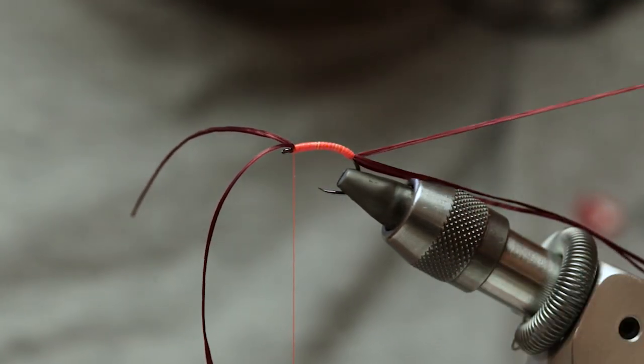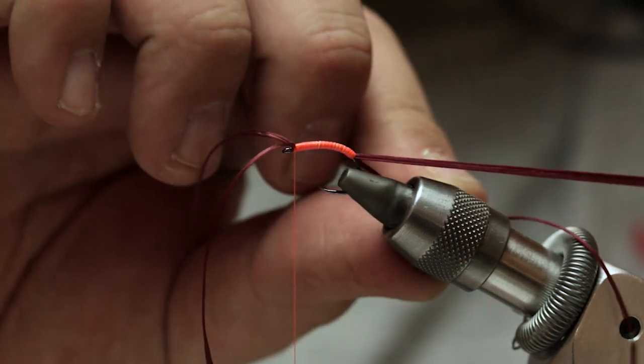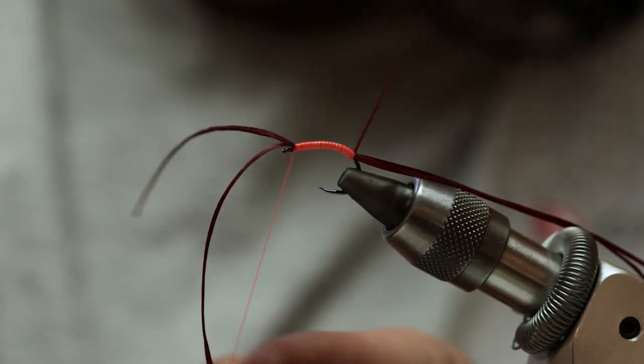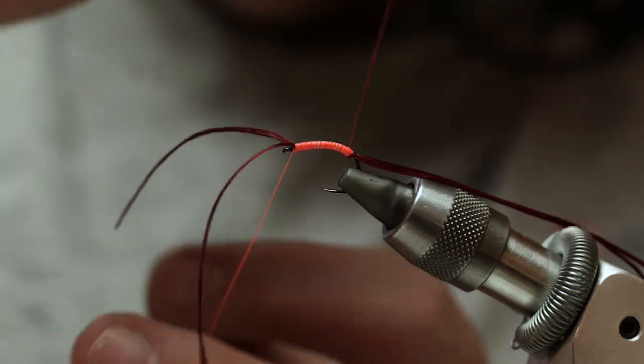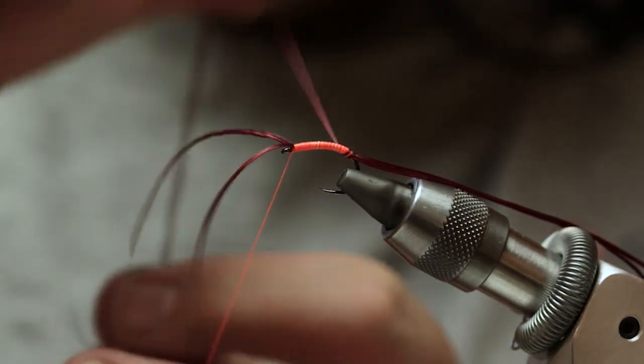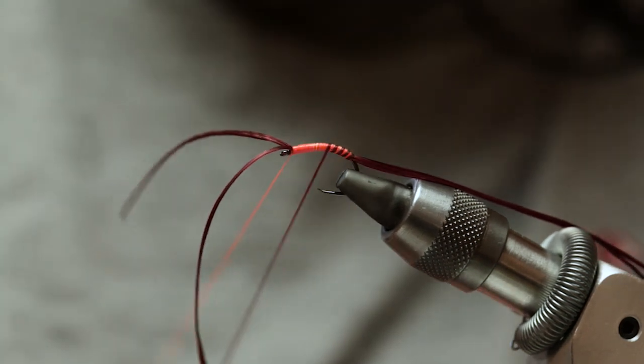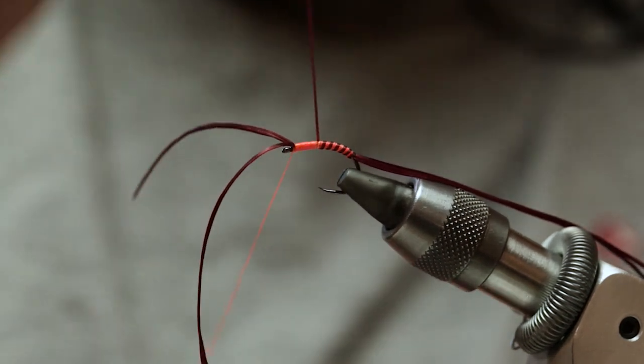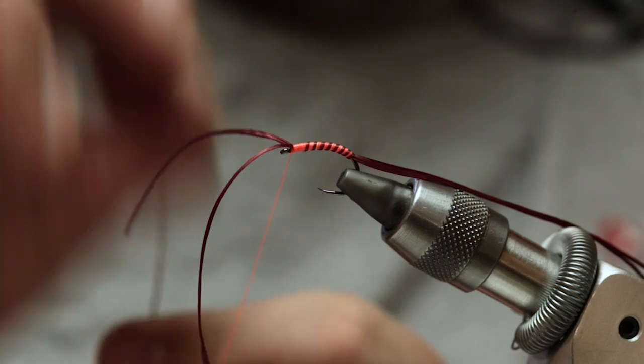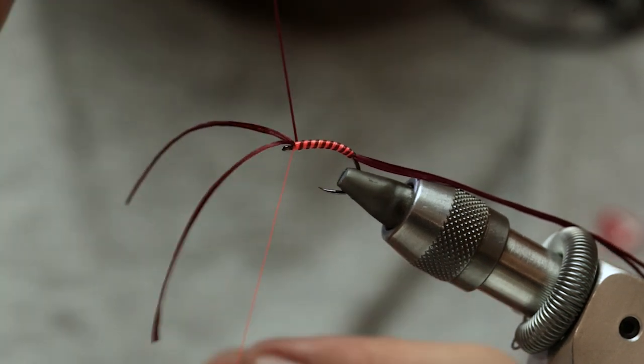Find your rib and then rib the body. Equal turns all the way up to that point there.